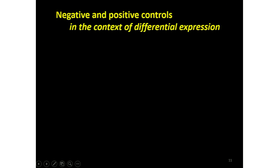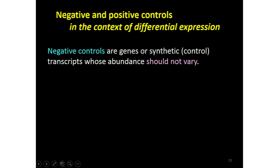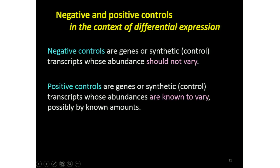I need to tell you what negative and positive controls are in this context. A negative control is a gene or a synthetic transcript which should not vary across your samples — you know it or you believe it. And of course a positive control is something that should vary. I should point out that people often use 'negative control' for a synthetic transcript which should not be measured at all — right down at the baseline background. That's not my use of negative control. Possible negative controls might include ERCC spikes which are added, or a housekeeping gene which in your experiment at least shouldn't change.